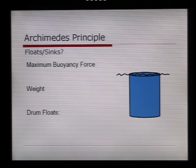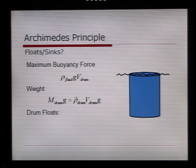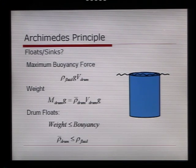So let's take a look at whether something floats or sinks. We have some sort of cylinder here, which is submerged in a fluid. Its maximum buoyancy force is the density of the fluid times gravity times the volume of this drum. The weight of the drum is the mass of the drum multiplied by gravity, which is equal to the average density of the drum. The drum floats when the weight is less than or equal to the buoyancy force, and that means that the average density of the drum would have to be less than or equal to the density of the fluid.